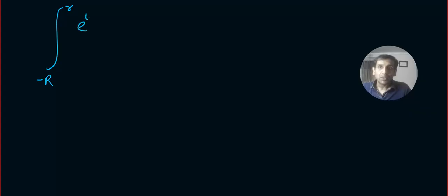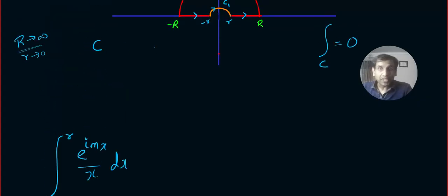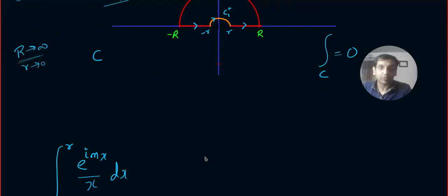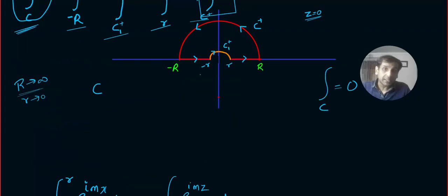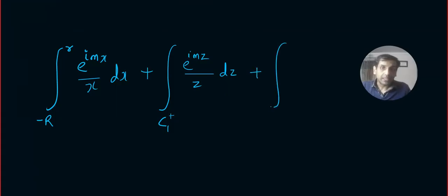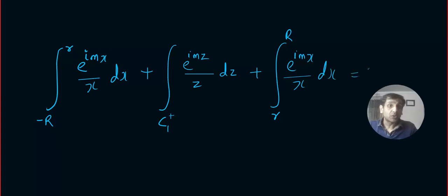What I got is: integral from −r to r of e^(imx)/x dx (using x because this segment is on the x-axis), plus integral over C₁⁺ of e^(imz)/z dz (the small orange circle, not on the x-axis), plus integral from ρ to r of e^(imx)/x dx, and that equals zero. In your examination you have to explain how we got zero.